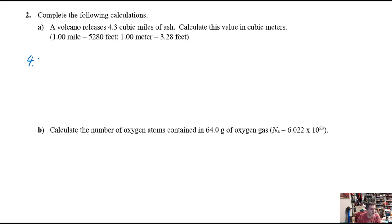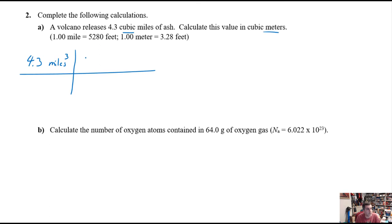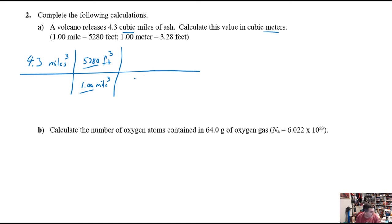Here's an example: I'm starting with 4.3 cubic miles and converting to cubic meters. We have cubic miles — that's a volume — so we have to be careful. We can use the conversion factor: 1 mile = 5,280 feet. But since we have cubic miles, you can't just leave it as linear miles. You have to cube everything — cube the 1, cube the 5,280 to get cubic feet. If you don't do that, you'll be off by quite a bit.